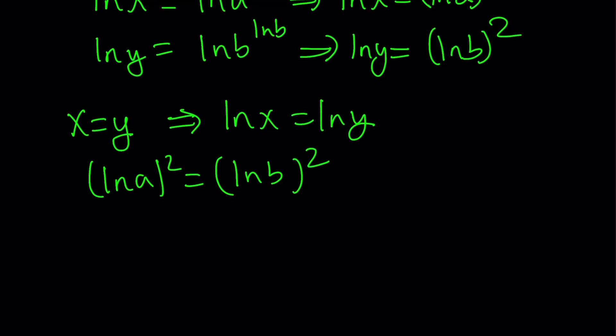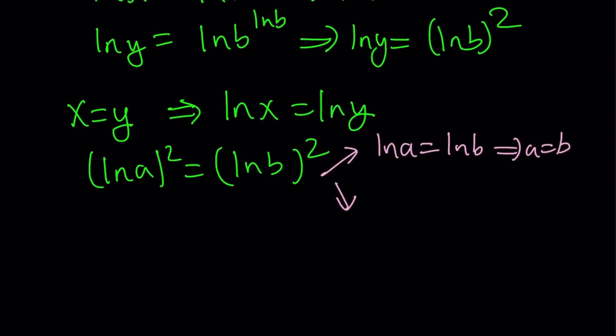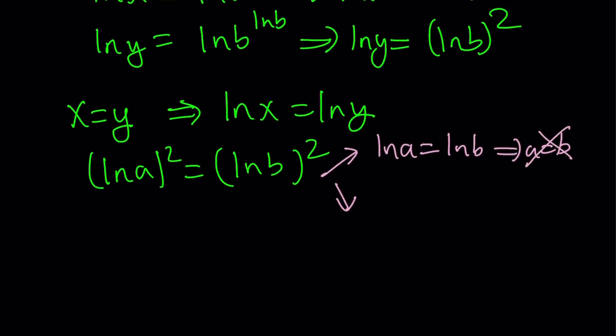And this gives us two solutions, or two conclusions we can come up with. Either ln a is equal to ln b, which implies a is equal to b. But we already talked about it. It's impossible. If a is equal to b, then a minus b cannot equal 1, right? So that's just trash. Throw it away.